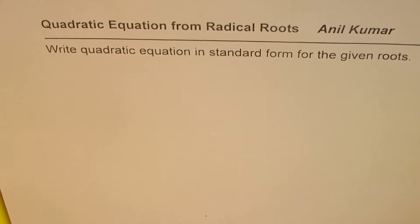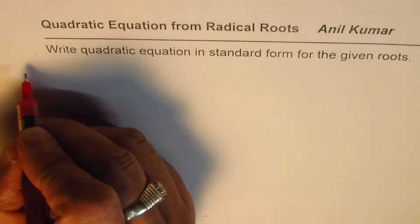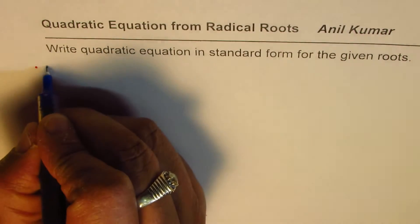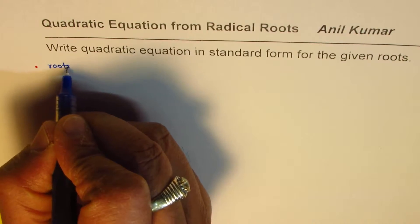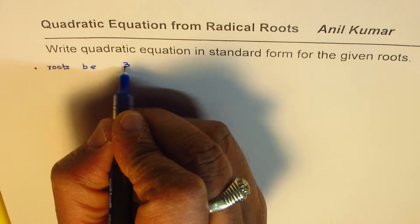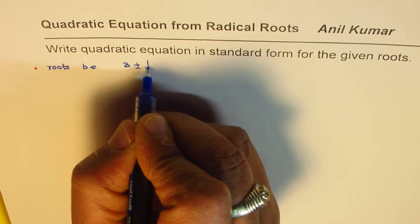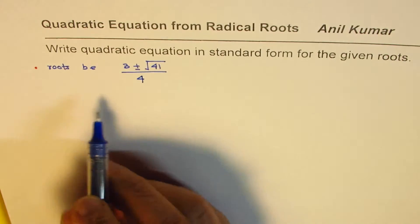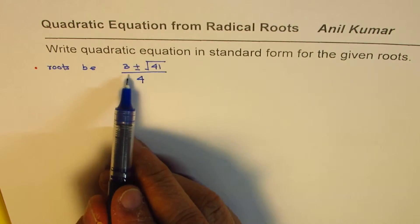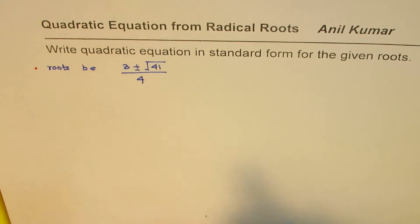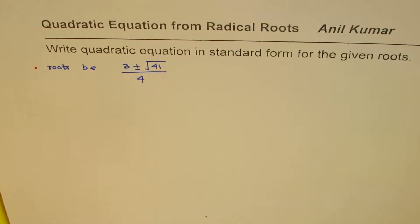Let me first write down the type of roots we are discussing. When we say radical roots, let the roots be 3 plus or minus square root of 41, divided by 4. When I say the roots of a quadratic equation are (3 ± √41) / 4, I want you to write down the quadratic equation which has these roots — that's the question.